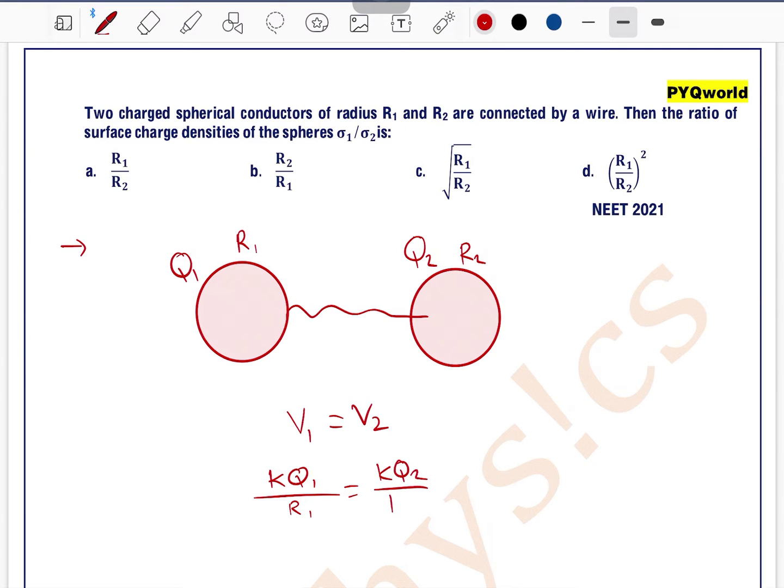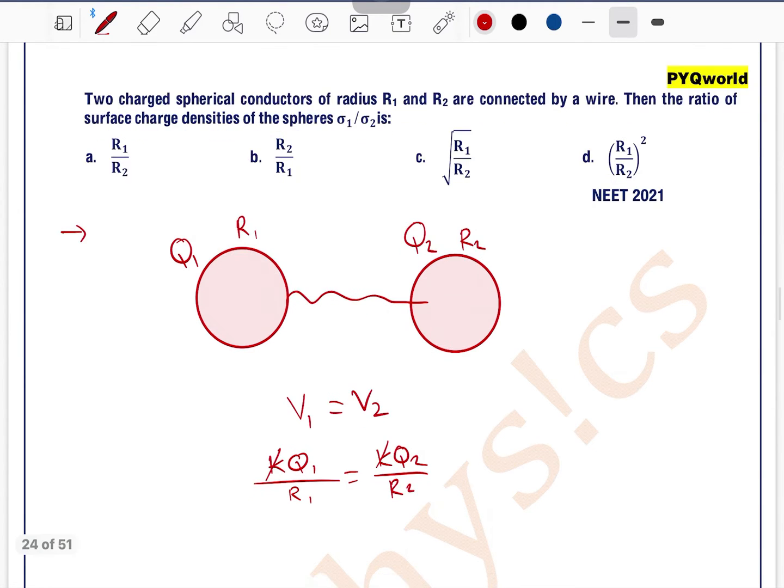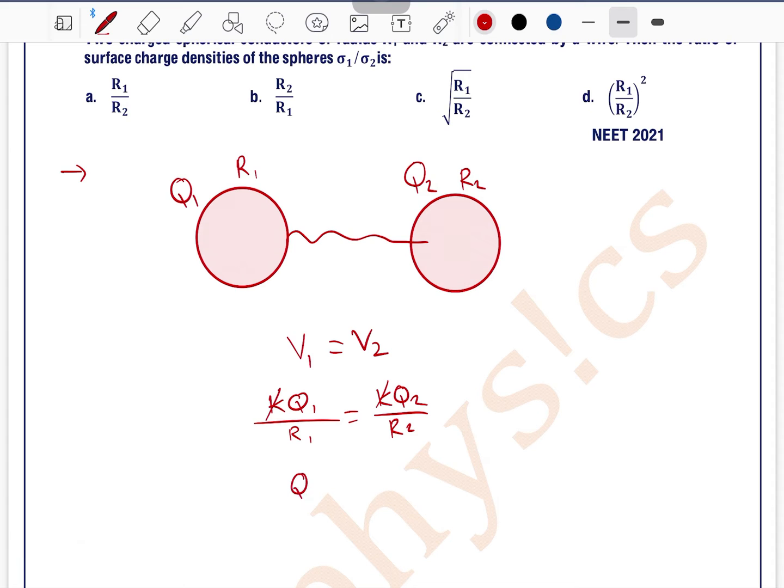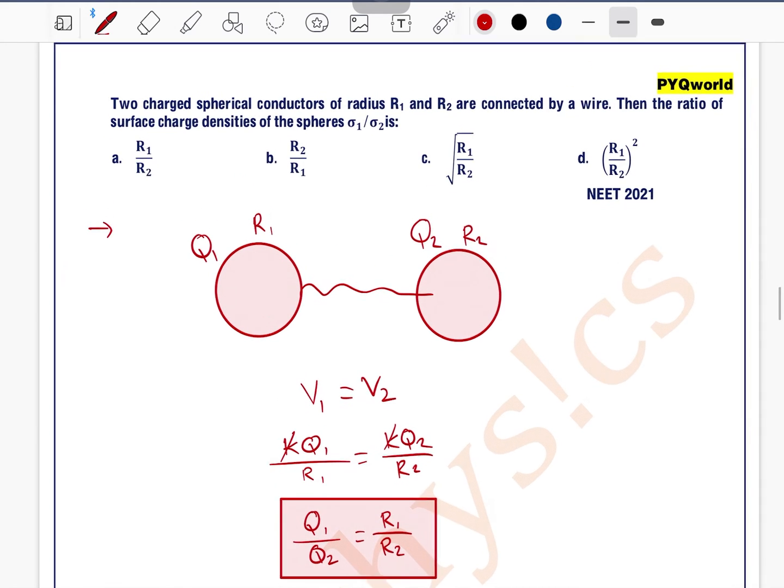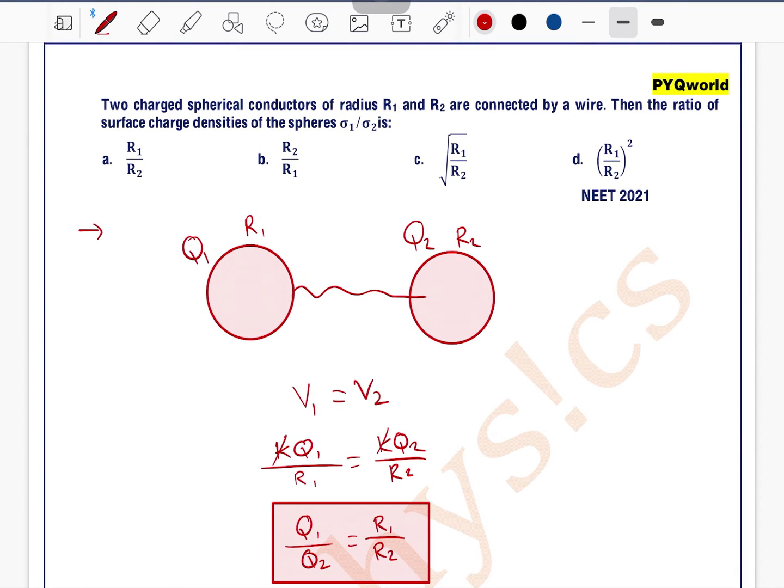We know potential formula v equals kq by r. So kq1 by r1 equals kq2 by r2. k cancels out and the ratio q1 by q2 can be written as r1 by r2. This is the ratio of charge on both spheres.